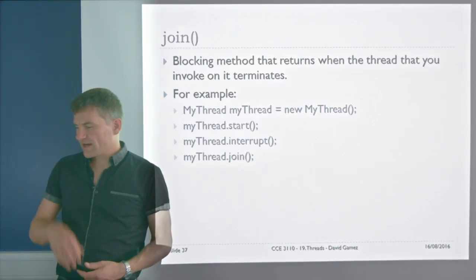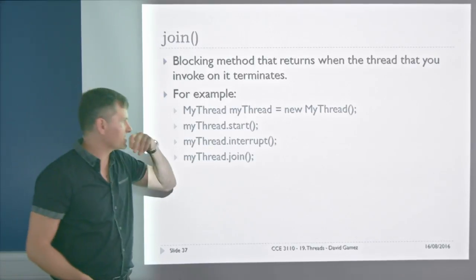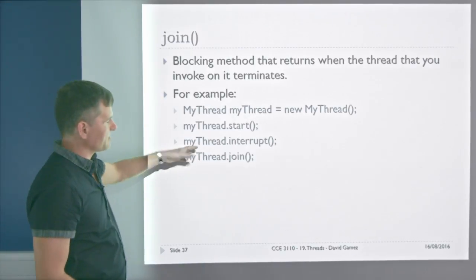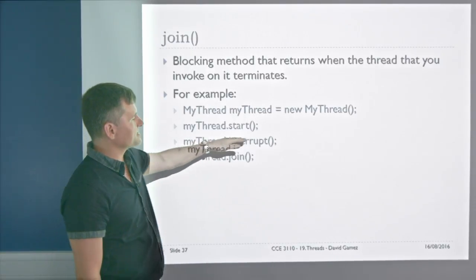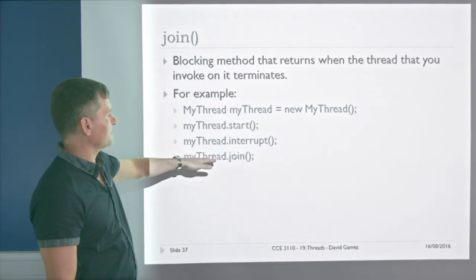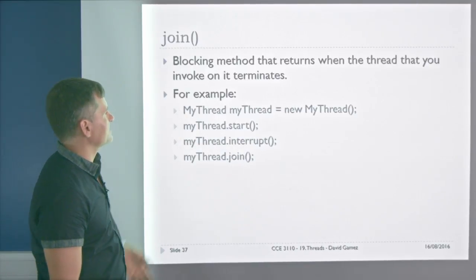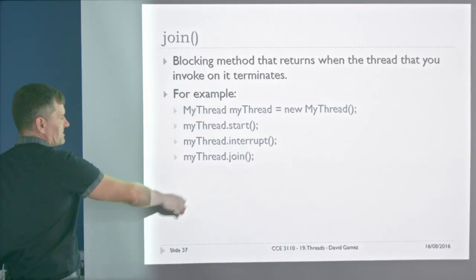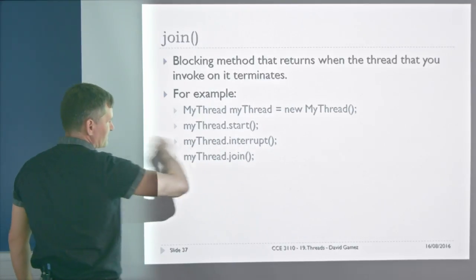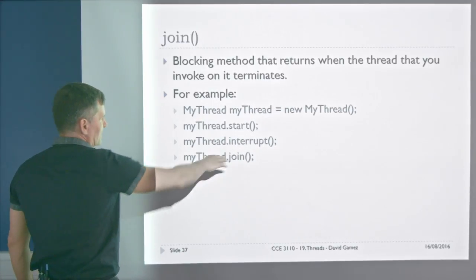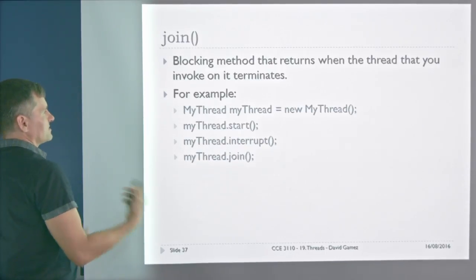join() is used after you interrupt a thread — you tell the thread to stop, then call join() to wait for it to finish before moving on. join() is a blocking call: once the thread's run method completes, join() returns and you can continue.